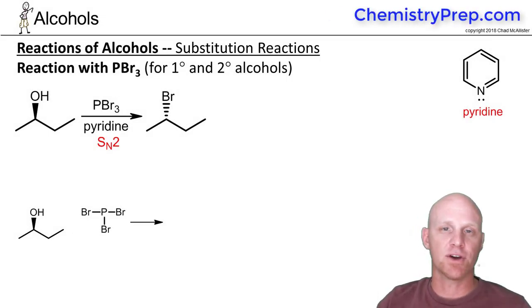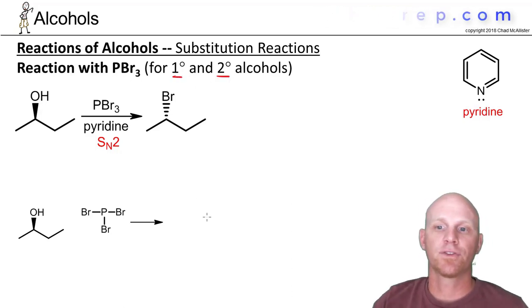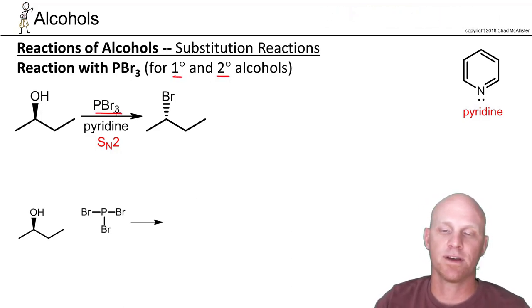All right, so it turns out instead of using HBr for both primary and secondary alcohols, there's an alternative, and that's using PBr3 here. In this case, it only works for primary and secondary alcohols because it goes through an SN2 mechanism. You can't do SN2 on a tertiary carbon, so that's why you can't use this with tertiary alcohols. But for primary and secondary alcohols, it's a great alternative.